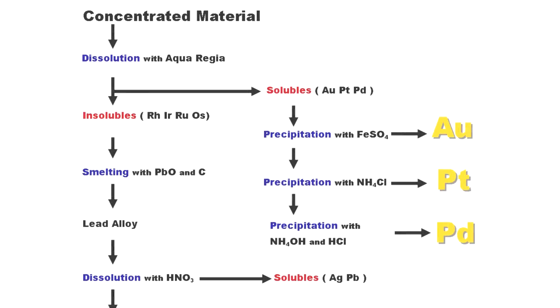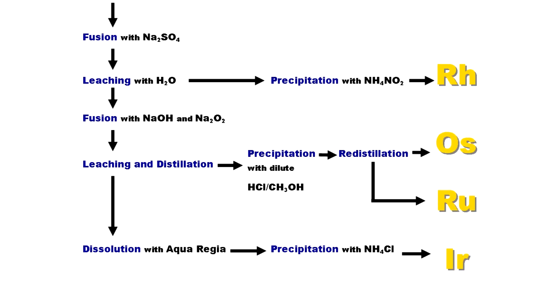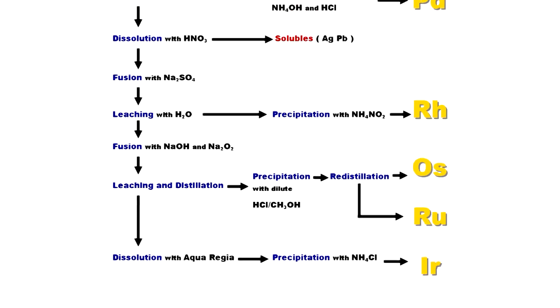In summary, this refining process diagram shows examples of the many chemical reactions using precipitation to separate, concentrate, and refine precious metals.